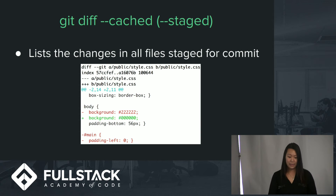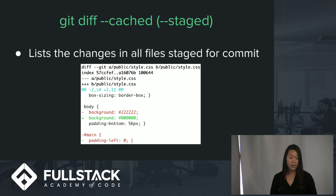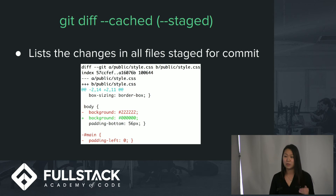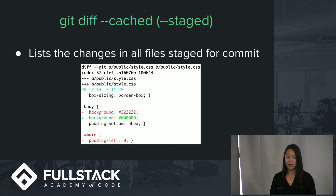`git diff` shows you the difference between the last commit and the state of your current working directory — a good way to compare what you've changed so far. But if you add the `--cached` option, also called `--staged`, it lists the changes in all the files you've staged for commit. It's really useful because you can go through what you've added and changed before you actually commit it, previewing everything, making sure you have the right files and right changes, so when you write that commit message it's clear exactly what you've done.